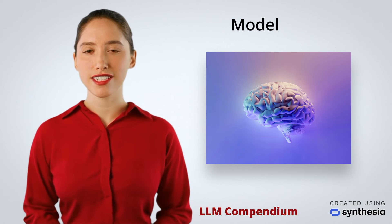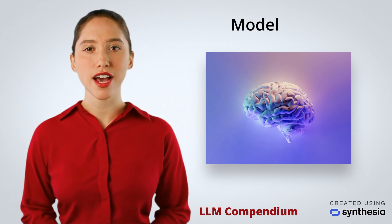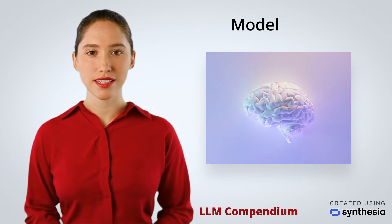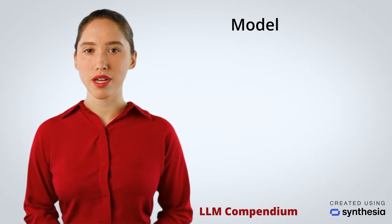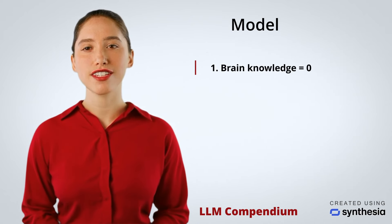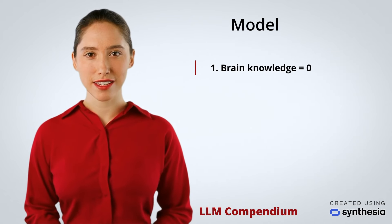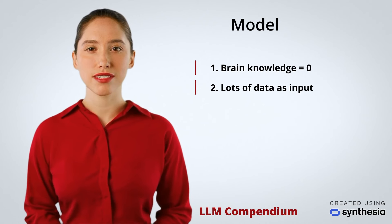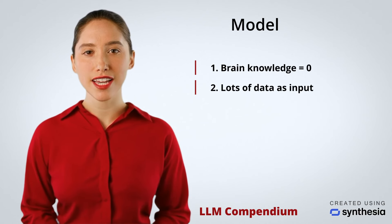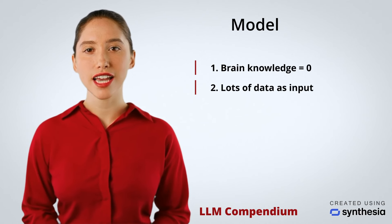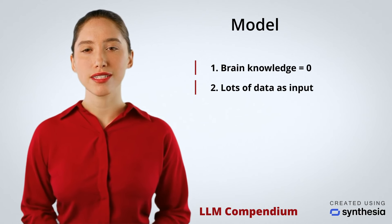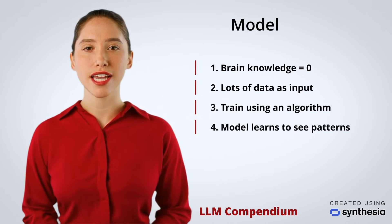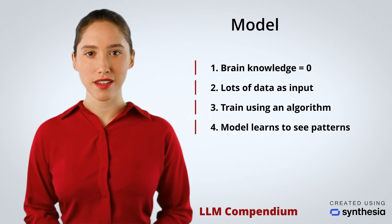These digital brains, or models, are commonly trained through the following process. We start with a digital brain that knows nothing about the task. We feed in some examples in the form of text, images, audio, or any kind of data, and use a smart algorithm that teaches this brain to find patterns in this data.